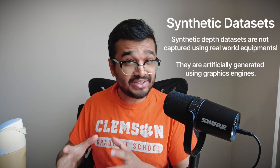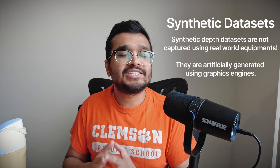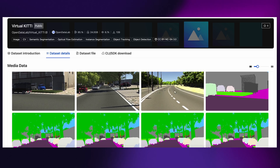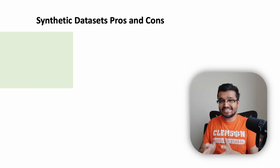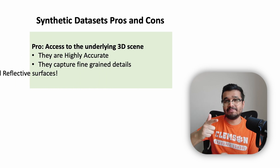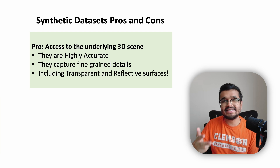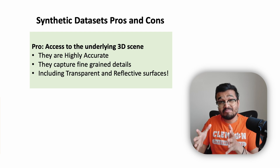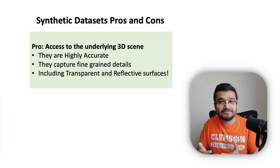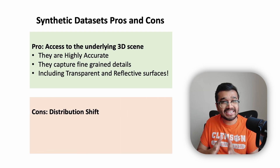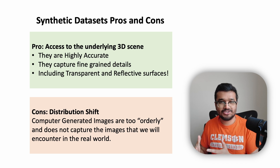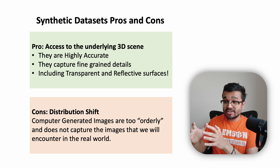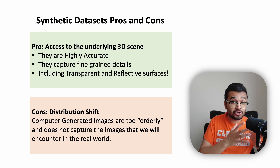Synthetic datasets are generated through graphics engines and not captured using any equipment. An example is the Virtual KITTI dataset, which uses the Unity game engine to create rendered images and depth maps for automated driving. On the pro side, they are super accurate, have high-resolution output capturing the finest details, and depth of transparent and reflective surfaces is easily obtained. Synthetic datasets have direct access to all 3D information in the scene. On the con side, these images may not capture the scenarios we encounter in the real world — a distribution shift where training data doesn't match inference data, causing neural networks to perform worse on real-world tasks.